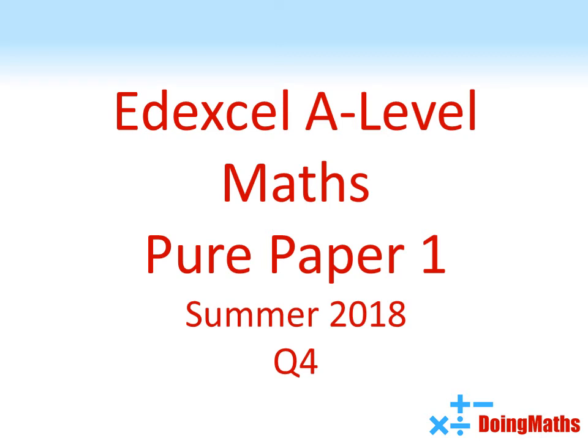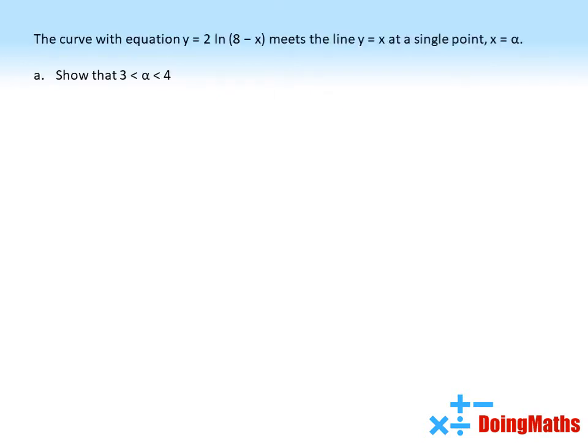Edexcel A-Level Maths, Pure Paper 1, Summer 2018, Question 4. The curve with equation y = 2 ln(8 - x) meets the line y = x at a single point, x = α. Part A: show that 3 < α < 4.